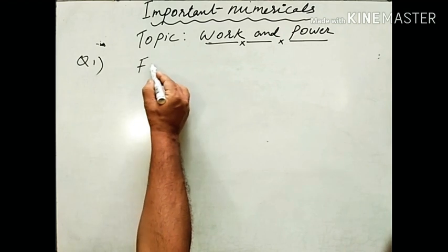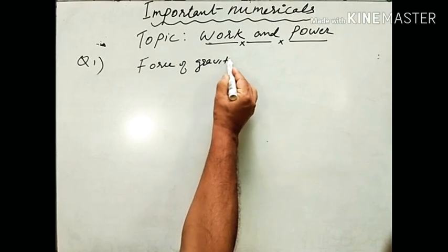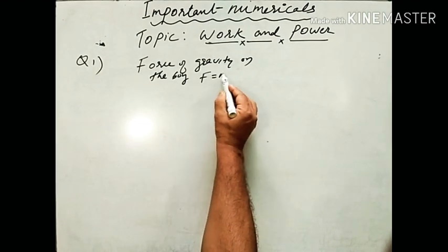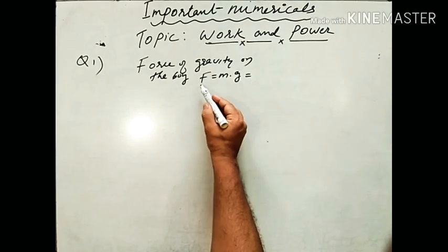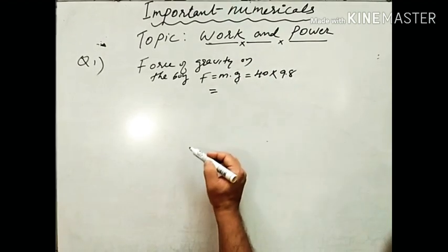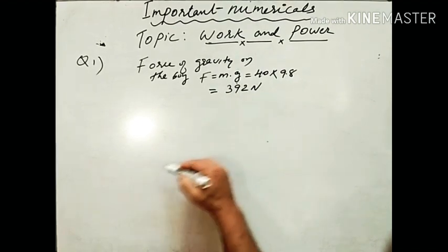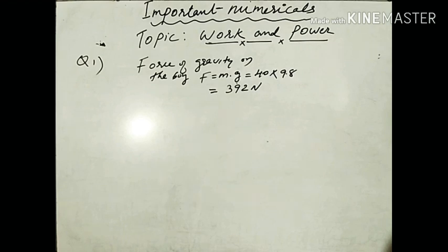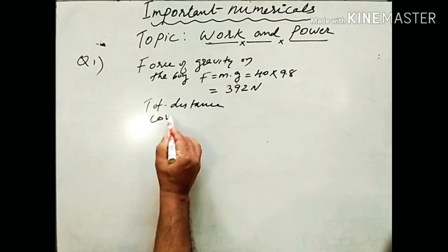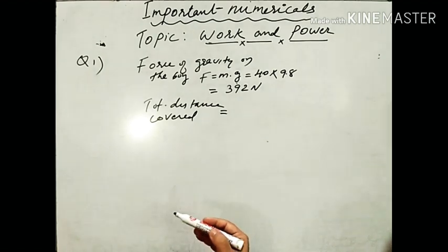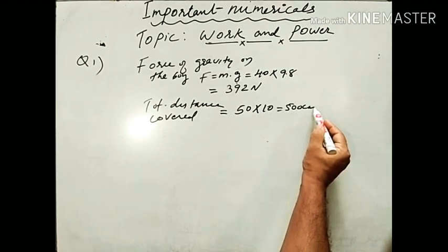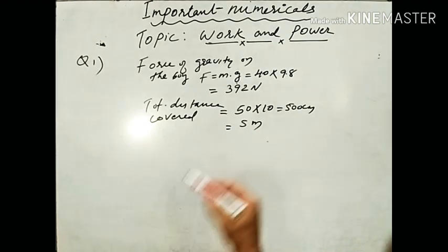The force of gravity on the boy: F = mg. Mass is 40 kilogram, and g = 9.8, so 40 × 9.8 = 392 Newton. The total distance covered by the body is 50 steps of 10 centimeter height, equal to 500 centimeter, which converts to 5 meter.